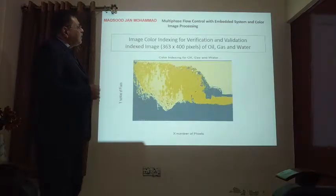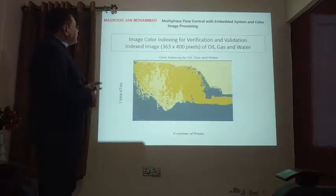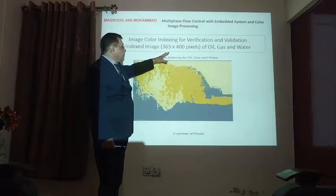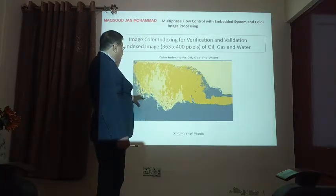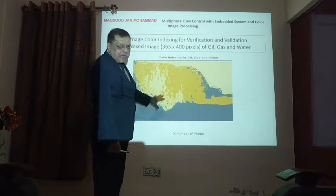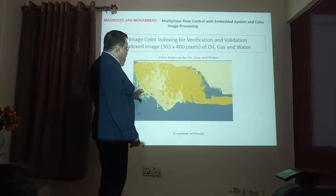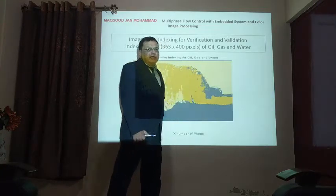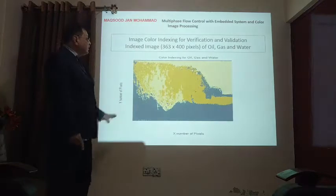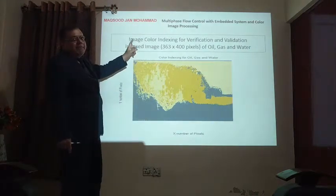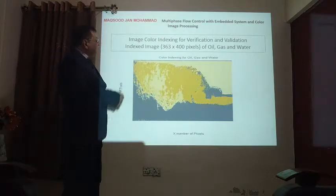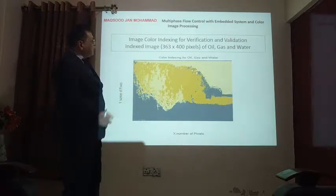For verification and validation of the data, we also use other techniques — including image color reduction. In image color reduction, three colors represent the three phases: oil, gas, and water. These three colors show exactly how much oil, gas, and water is present. This is an image color indexing technique used for verification and validation of the data.